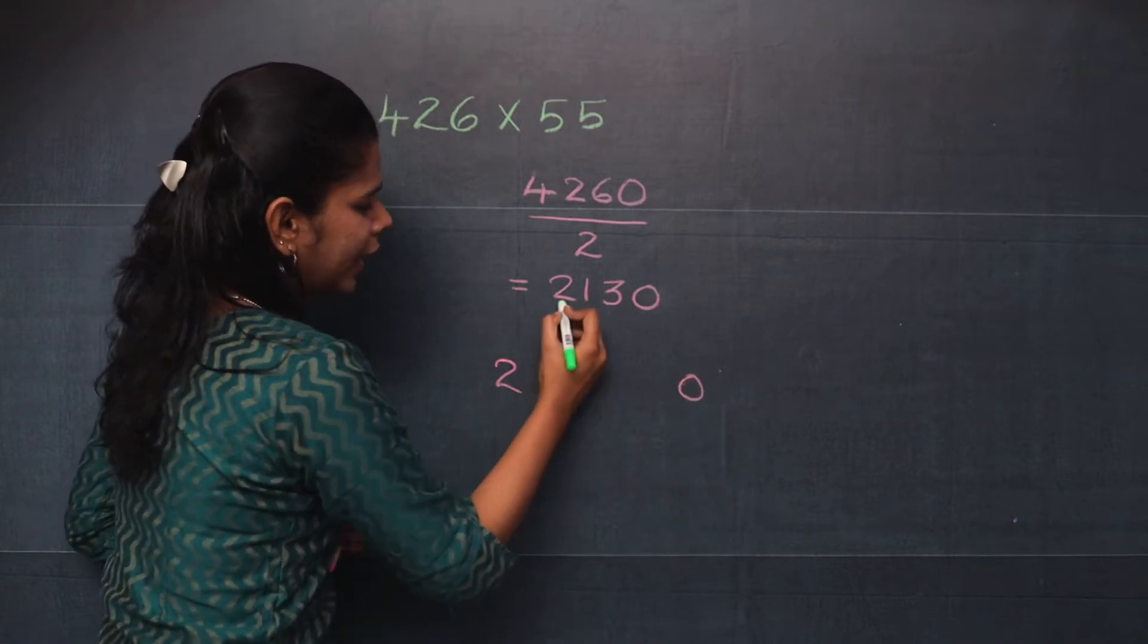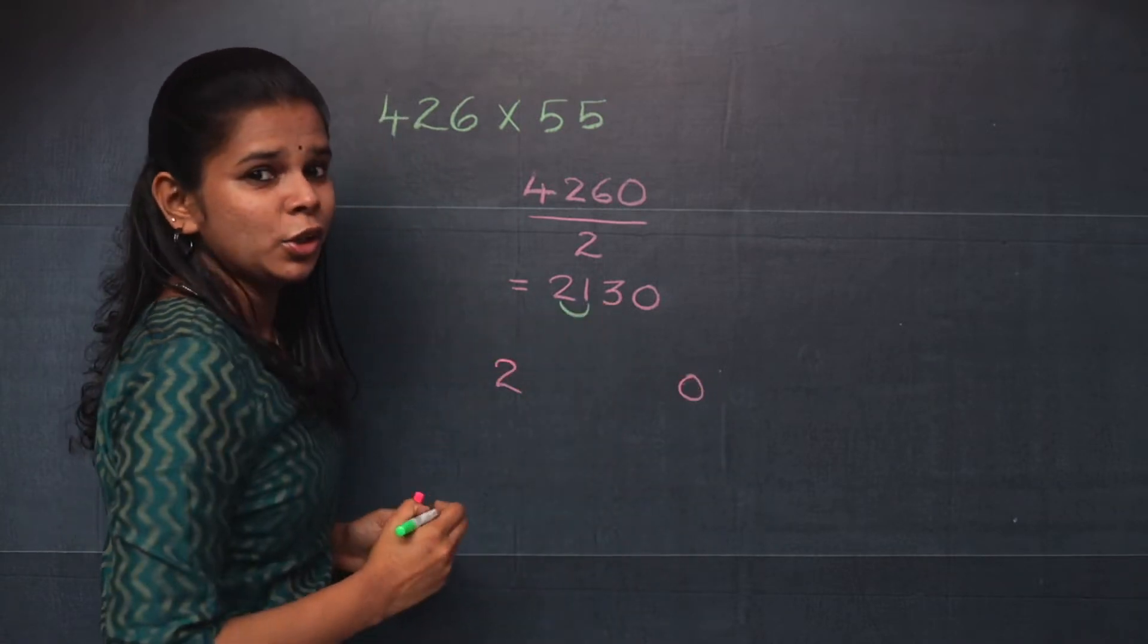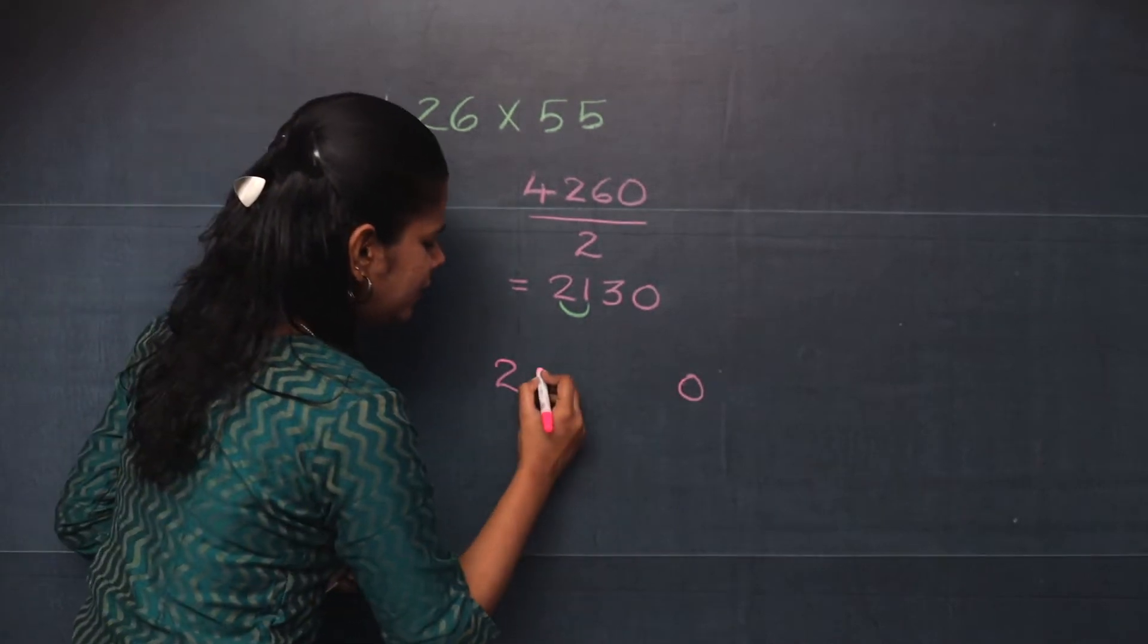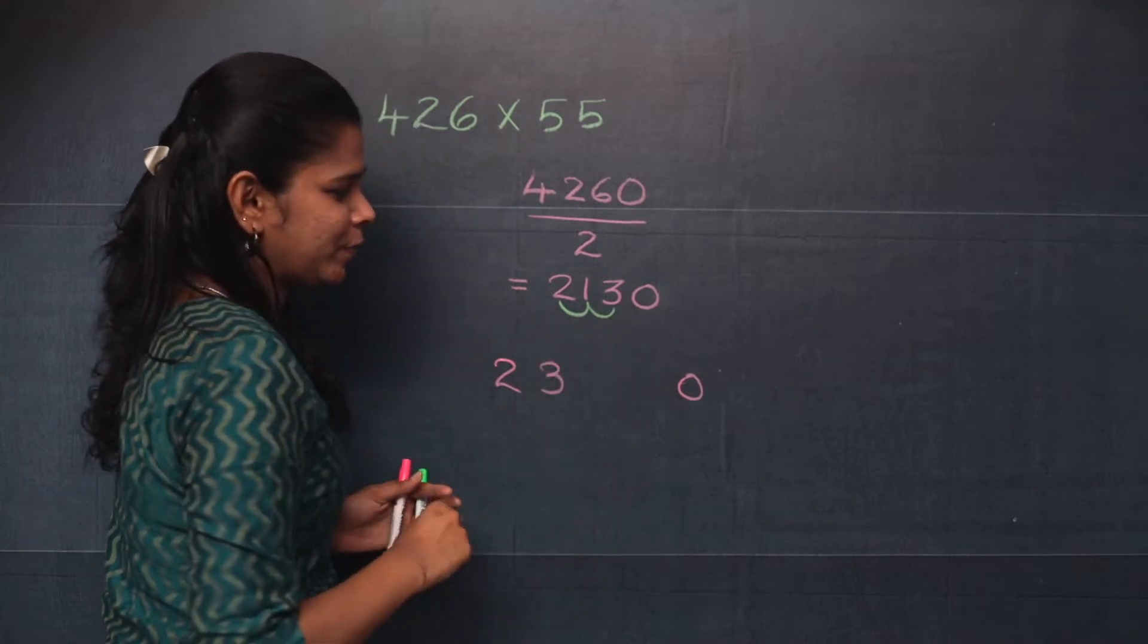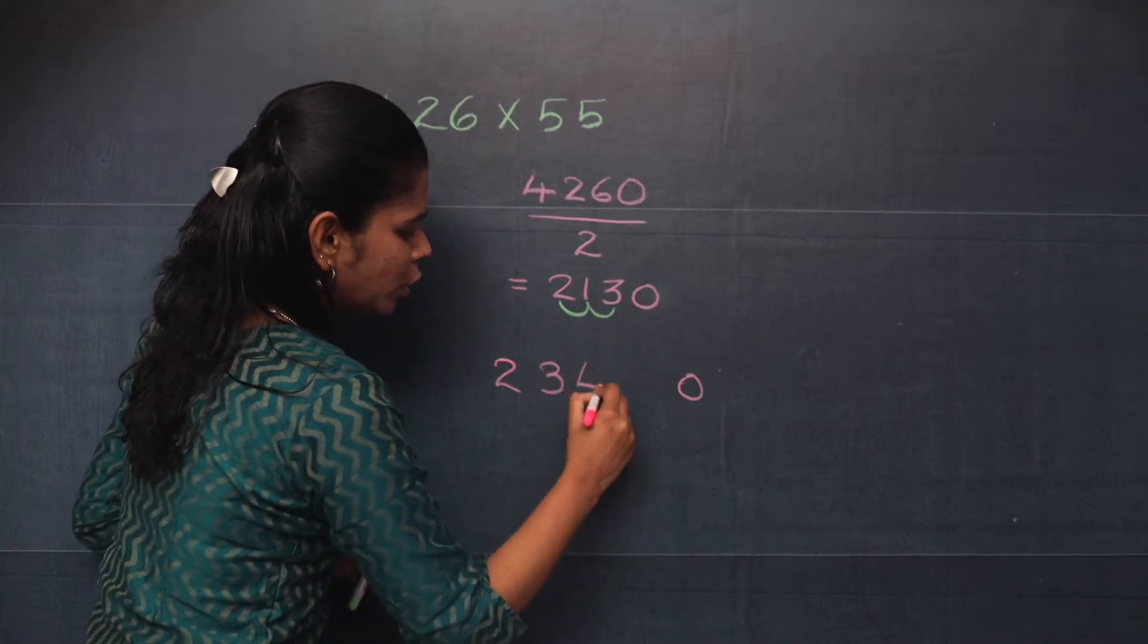Now you will add 2 and 1. 2 plus 1 is 3, so you will write that here. Now 1 plus 3, it is 4. You will write it here.